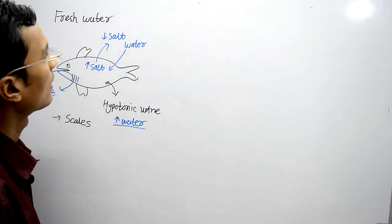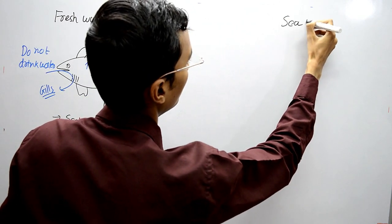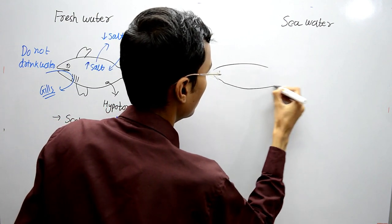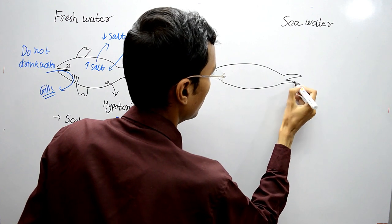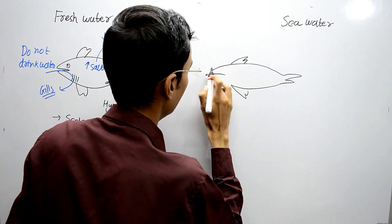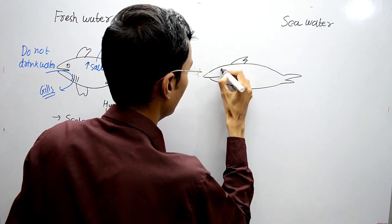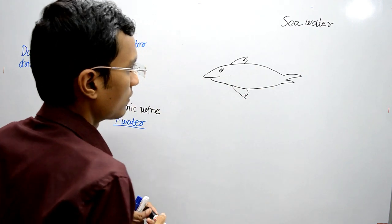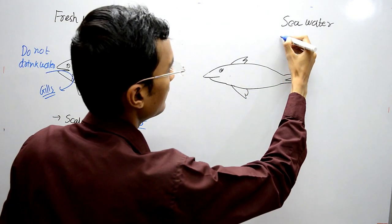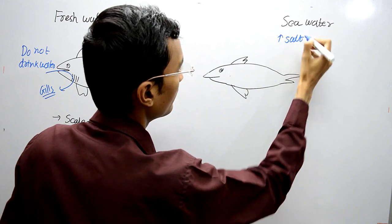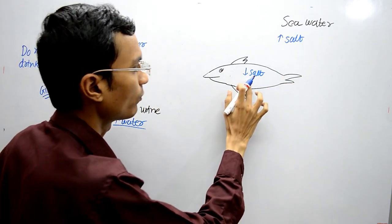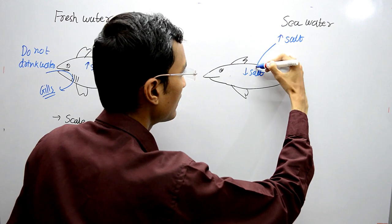Now for the fish living in sea water — I am drawing a diagram of the fish here. In this scenario, the salt concentration is higher in sea water, and the salt concentration inside the body is lower compared to the outer environment.